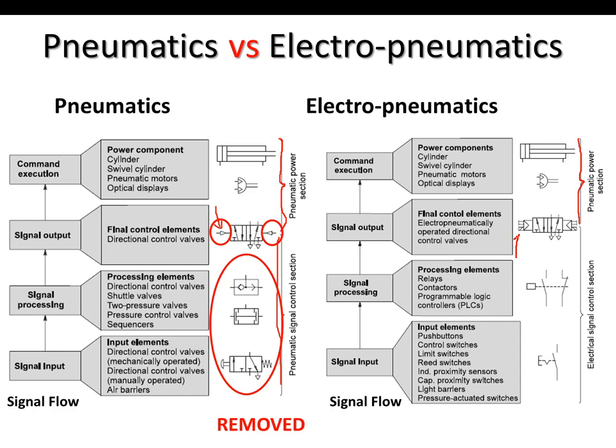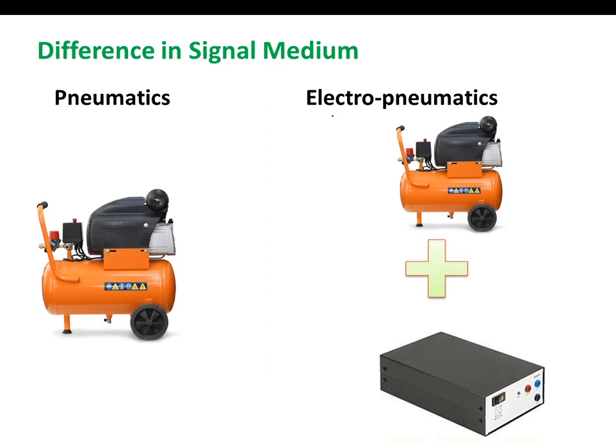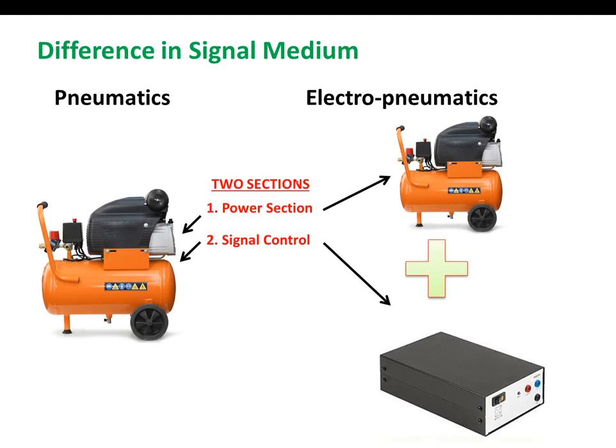The difference in signal medium: in pneumatics, we have compressors which provide signal to both the power section and the signal control section. Whereas in electro-pneumatics, we have compressors plus the DC power supply.